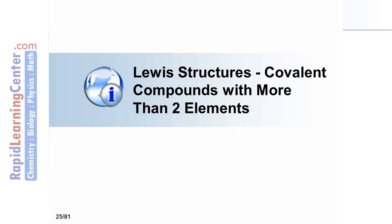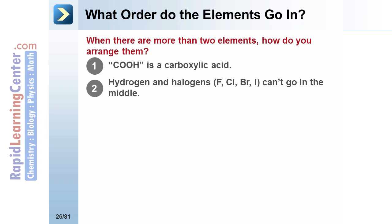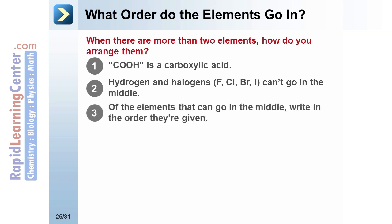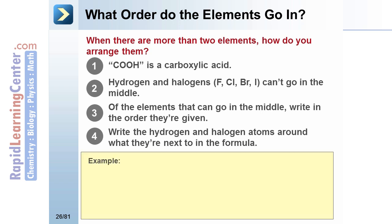How are Lewis structures drawn for larger molecules? When there are more than two elements, how do you know what order to arrange them in? Hydrogen and halogen atoms cannot go in the middle because they can only bond to one other atom at a time. Write the inside atoms in the order they appear in the chemical formula. Write the outside atoms around the atom they are written next to in the formula.